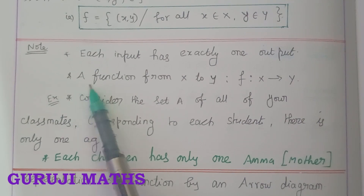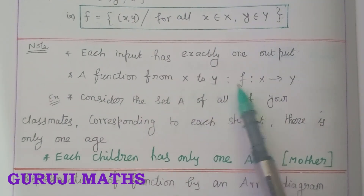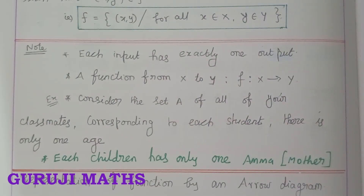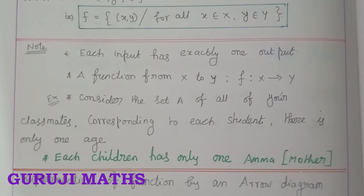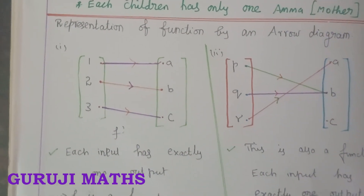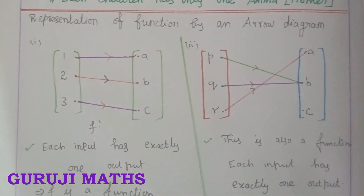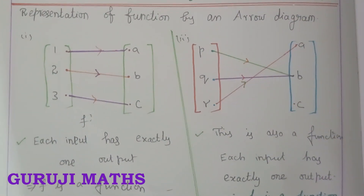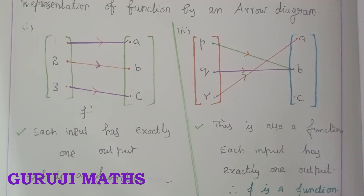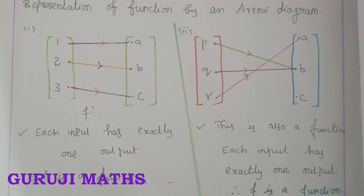This is the notation. So now we have a representation. Here are some examples.